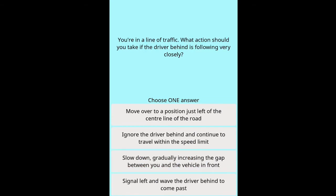Question: You're in a line of traffic — what action should you take if the driver behind is following very closely? Options: move over to just left of the centre line, ignore the driver and continue within the speed limit, slow down gradually increasing the gap between you and the vehicle in front, signal left and wave the driver behind to come past.